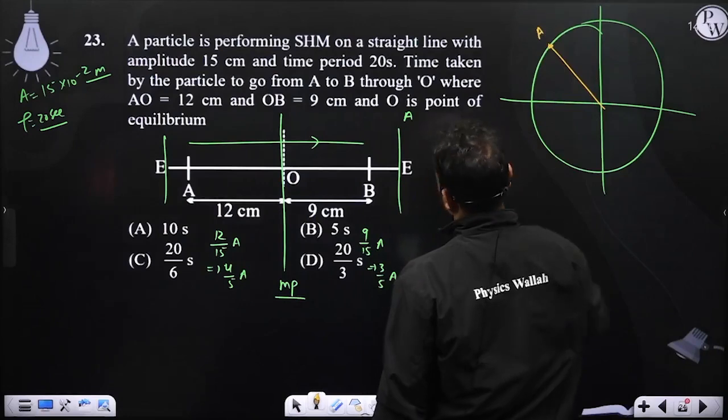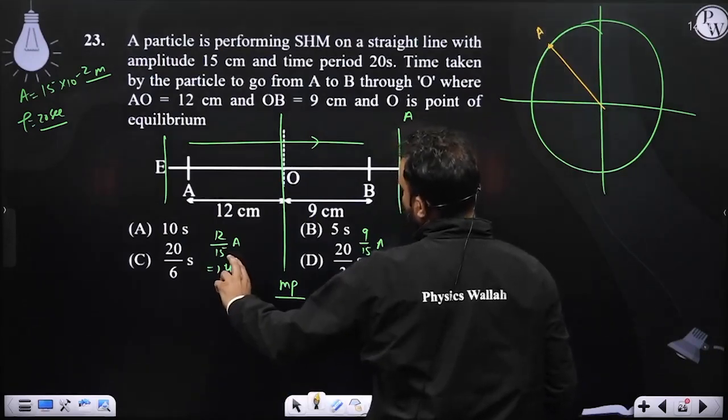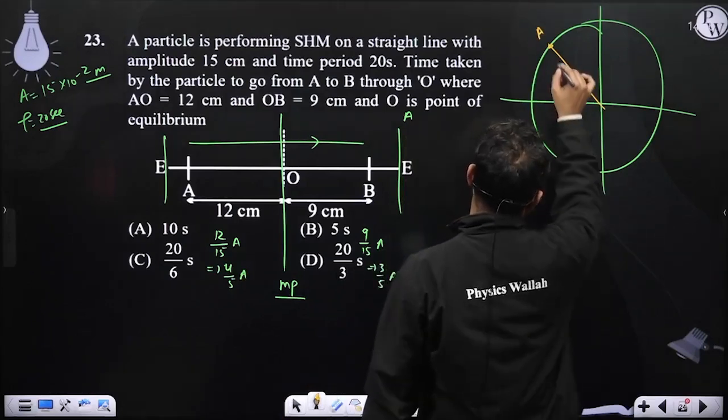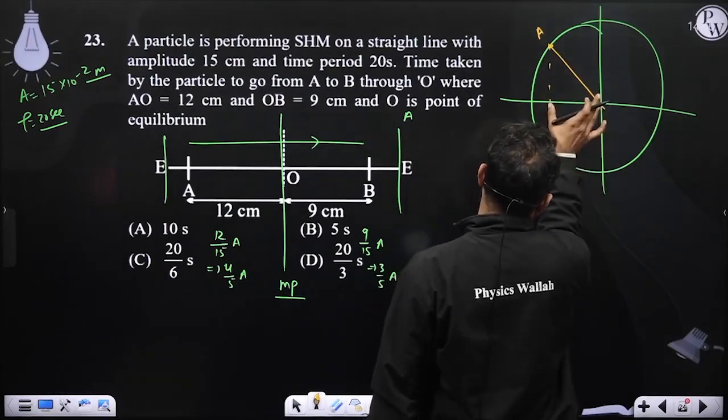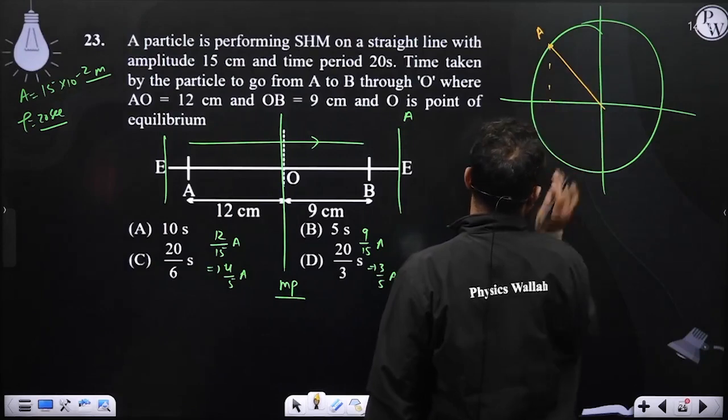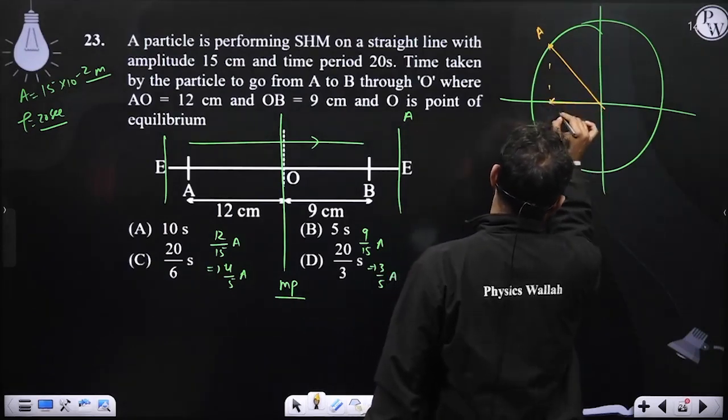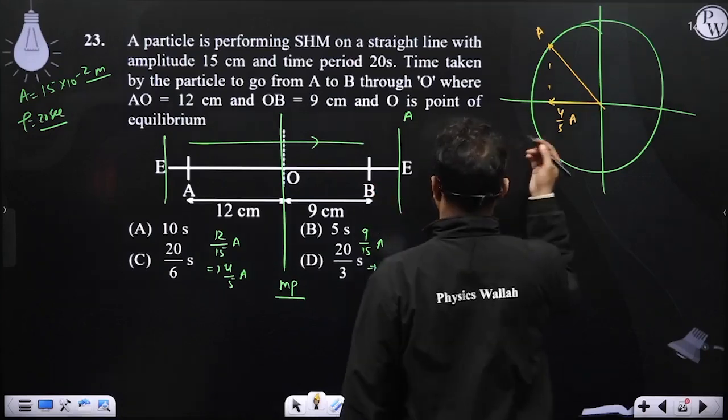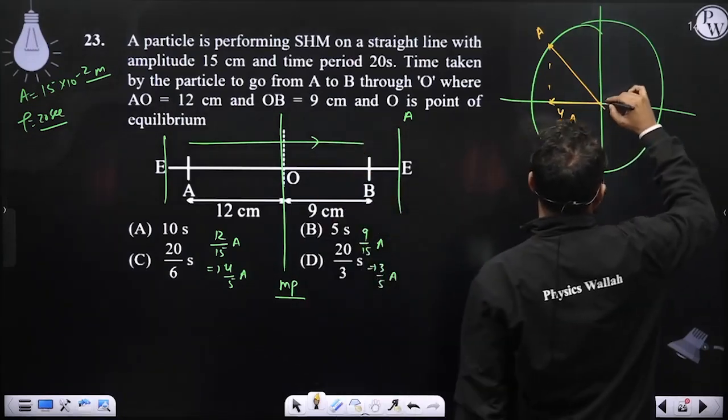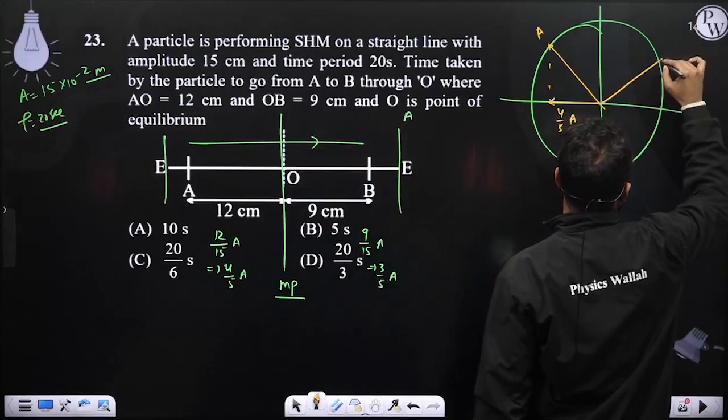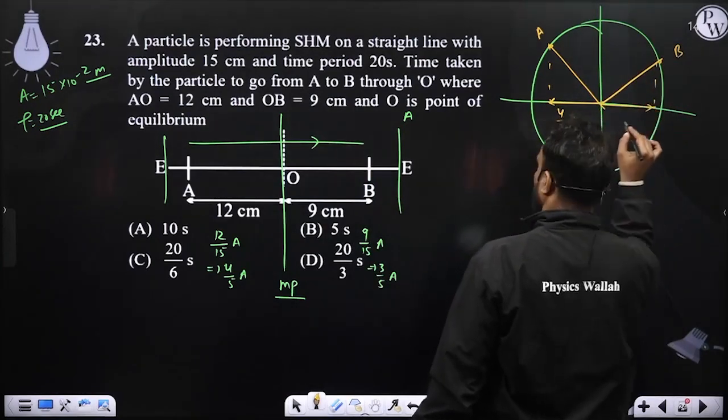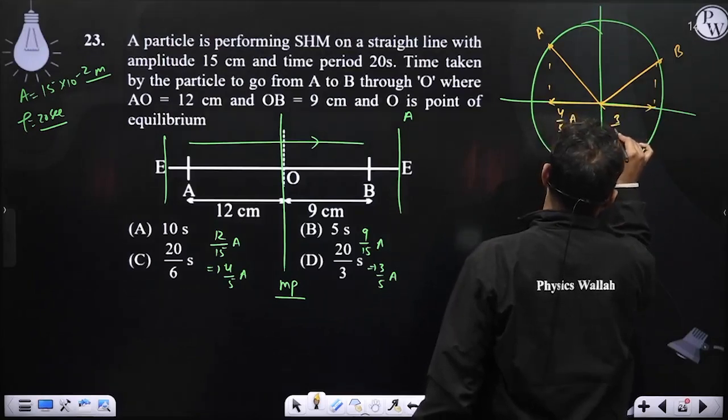Now this distance is 4 by 5, 4 by 5 which means 4 by 5 A, this is 4 by 5 A. Now B position is going towards the extreme from mean position, meaning B is somewhere here. And this position is basically 3 by 5 A.